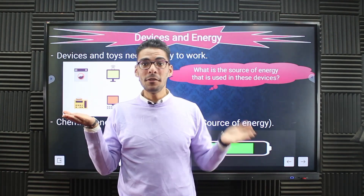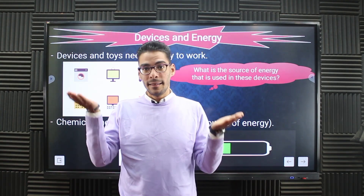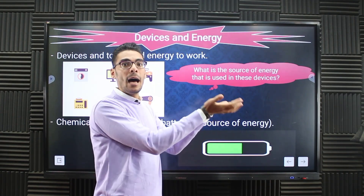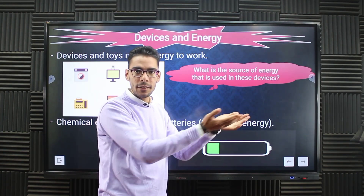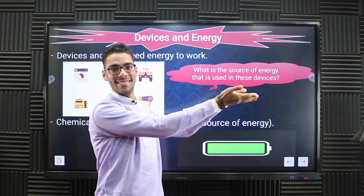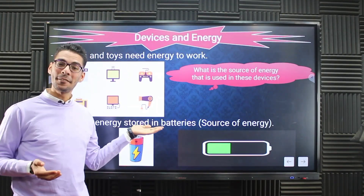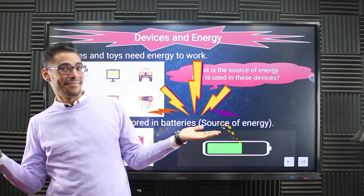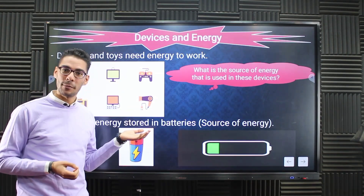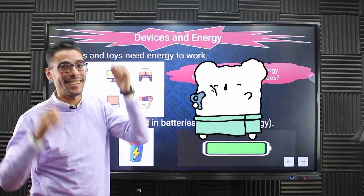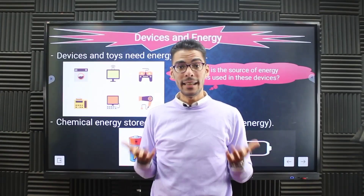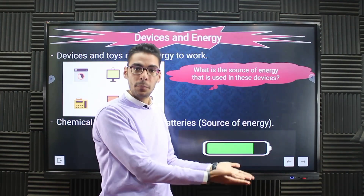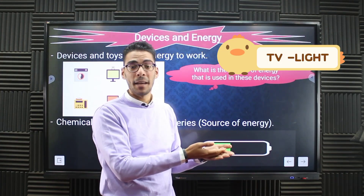We call the input energy the energy that the device needs to work, to produce another form of energy which is the output. Input goes in, output comes out. The hairdryer is another electric device that uses the same input energy — electric energy — but it produces a different form of energy: heat. This helps you change your hairstyle. So all electric devices use the same input, which is electric energy, but they differ in the output: the TV produces light, the hairdryer produces heat.